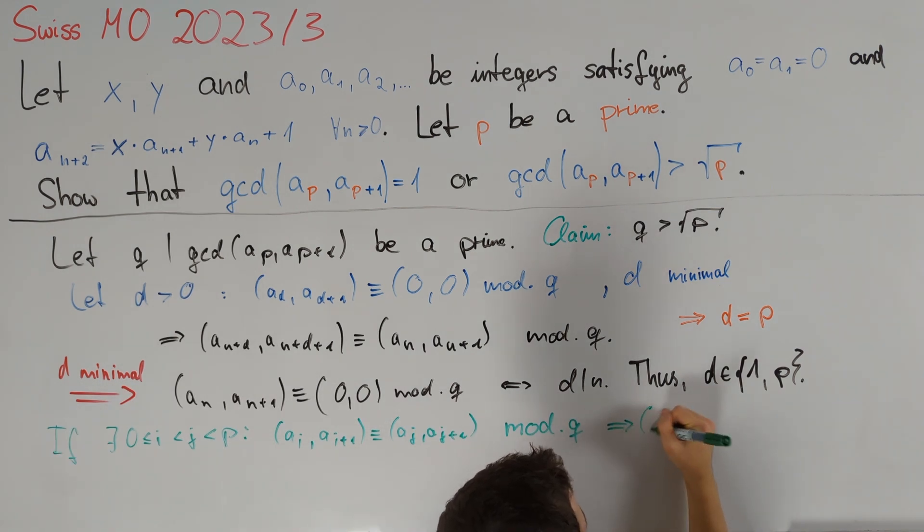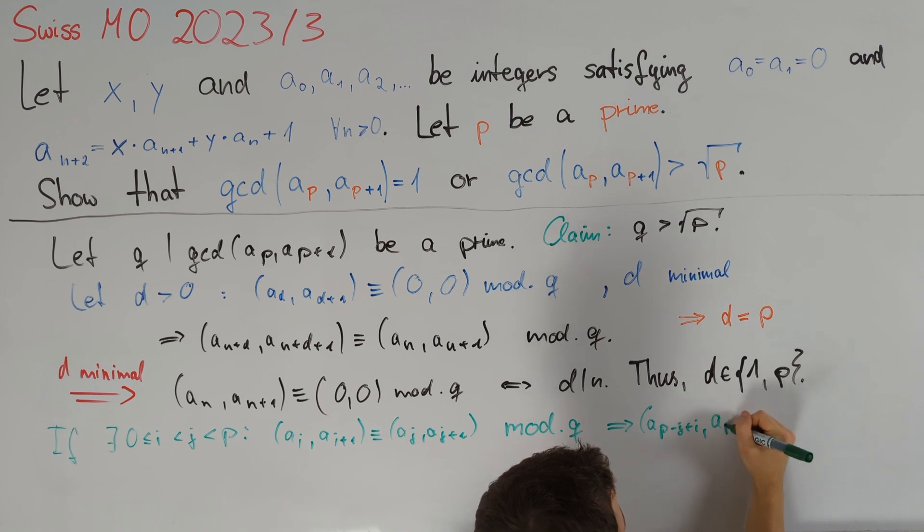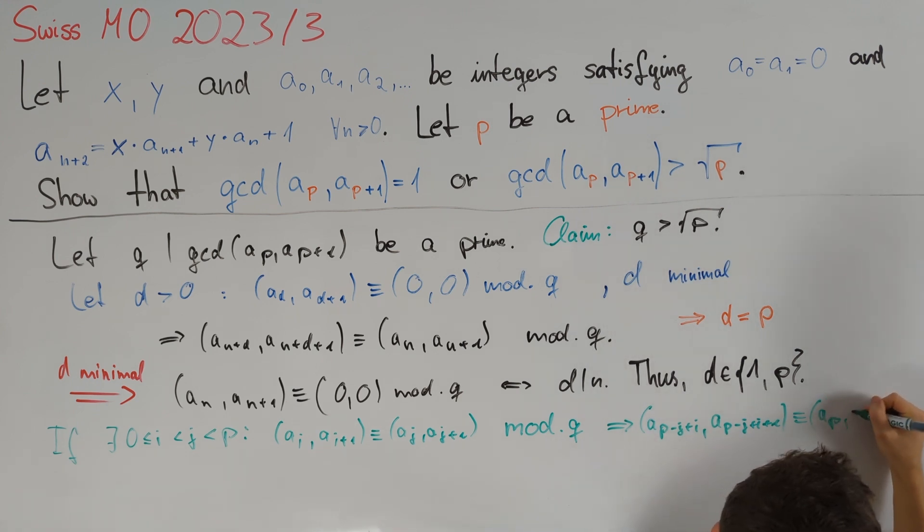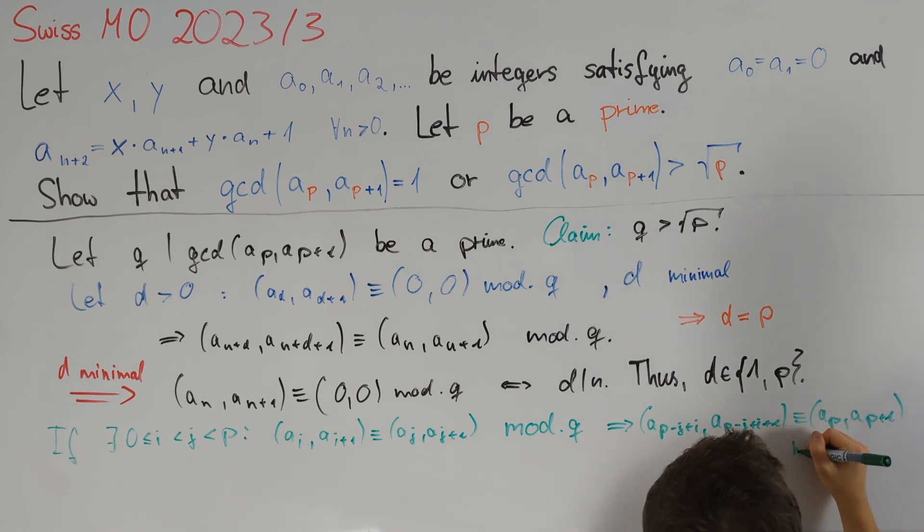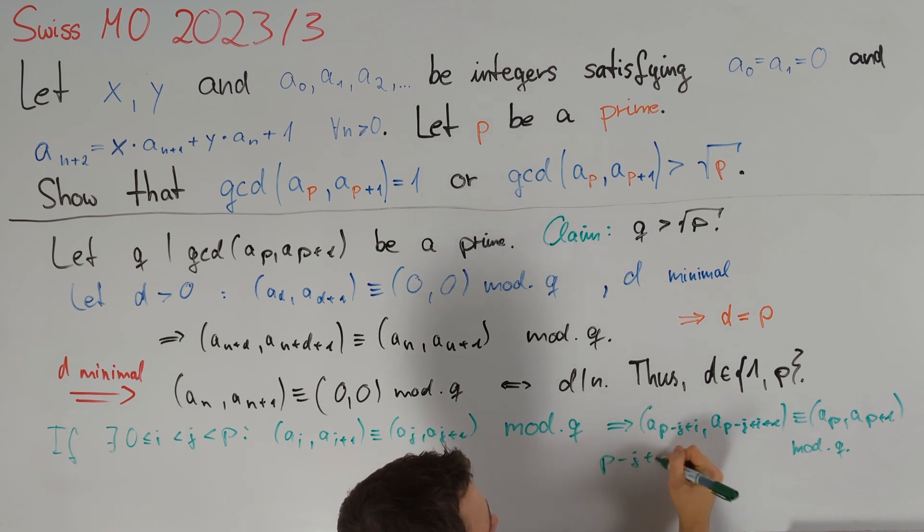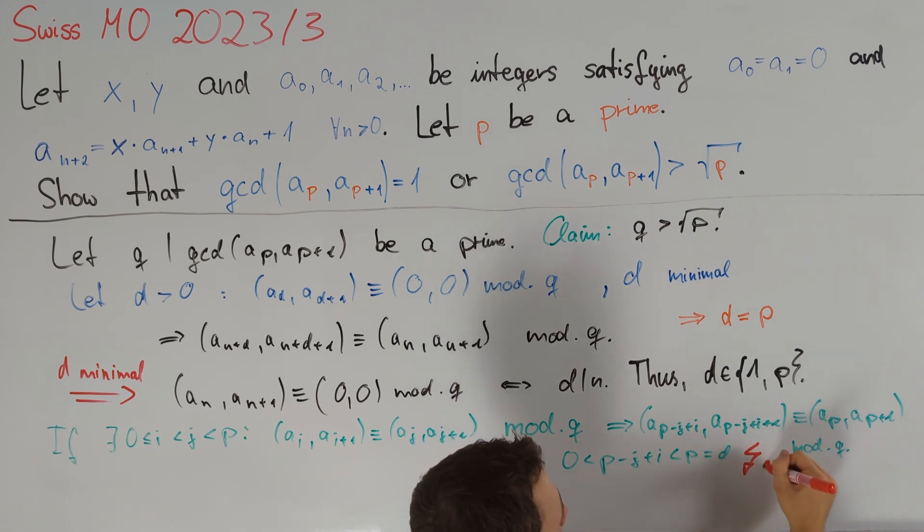This inductively implies that (aₚ₋ⱼ₊ᵢ, aₚ₋ⱼ₊ᵢ₊₁) is congruent to (aₚ, aₚ₊₁) or (0,0) modulo q. p minus j plus i lies strictly between 0 and p which equals d and therefore this is of course a contradiction to d minimal.